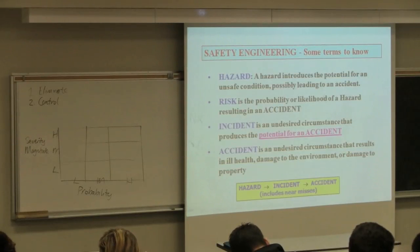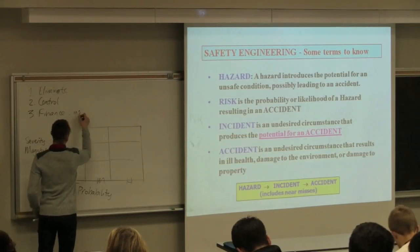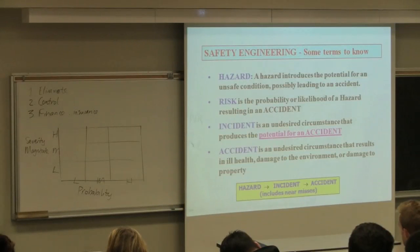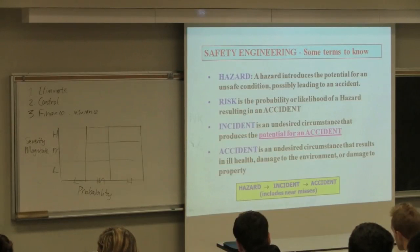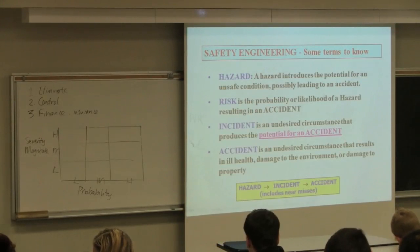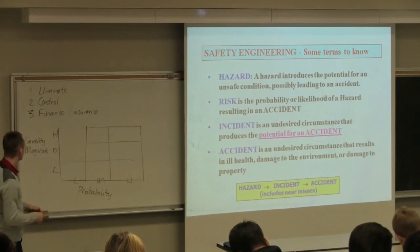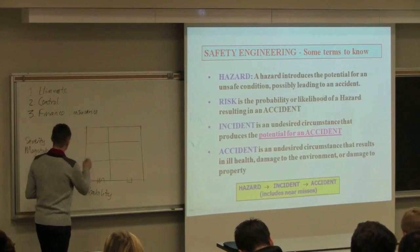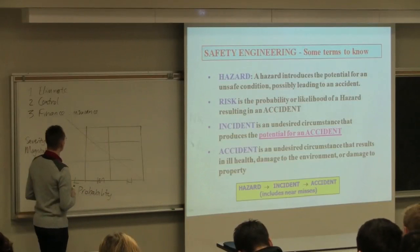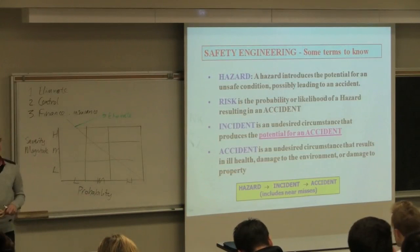An event here with high severity and high probability of occurrence, that's got an extremely high risk. The first part is to identify the risk by evaluating the probability of occurrence and the magnitude or severity of the effect. Then there's two ways we can deal with this. One is to eliminate the risk, simply remove that probability down to zero or the severity down to zero by changing to a totally new design.